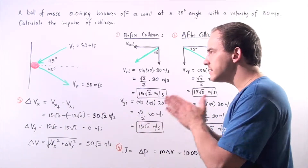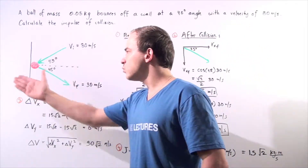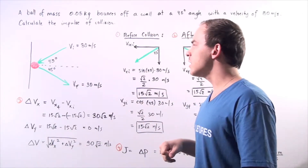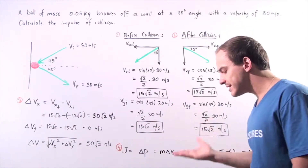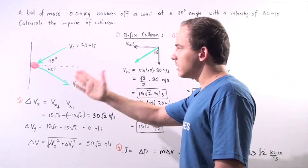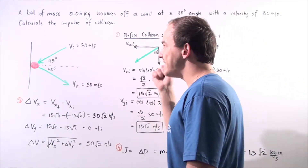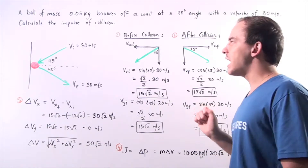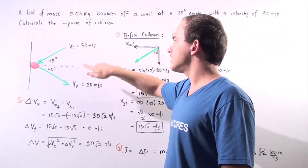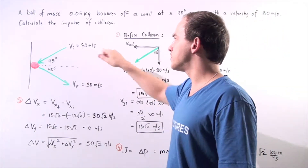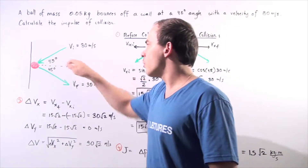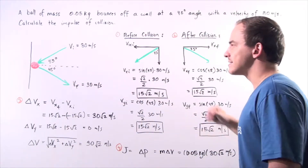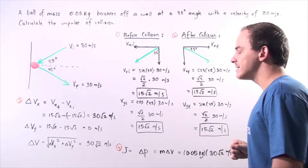So in this example, the wall is one object and this object with a mass of 0.05 kilograms is the second object. The wall is stationary and the object initially, before the collision, is traveling with an initial velocity of 30 meters per second at an angle of 45 degrees with respect to the x-axis, above the x-axis.